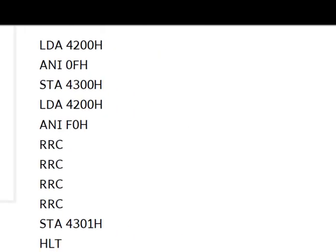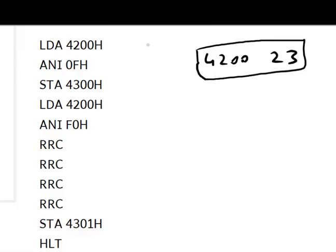Let us understand the program. Assume memory location 4200 has 23h stored. After execution, we expect 02 at 4300 and 03 at 4301, with the lower digit at 4300. The first instruction LDA 4200 loads the contents of memory location 4200 into register A, so A becomes 23.